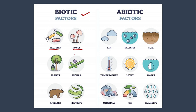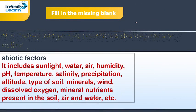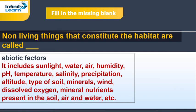Biotic components include all living organisms — microorganisms, bacteria, fungi, plants, archaebacteria, other bacteria, and animals including us. Abiotic factors include all physical conditions like air, soil, temperature, light, water, and even mountains and peaks.